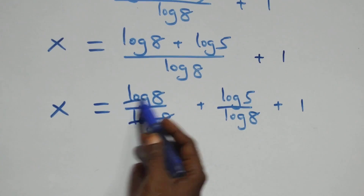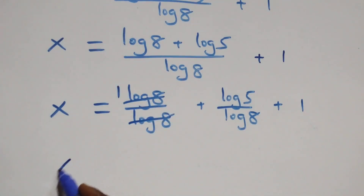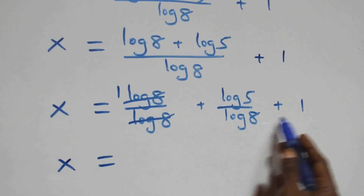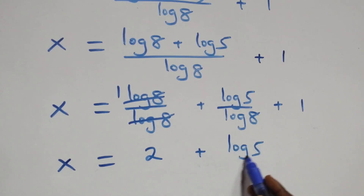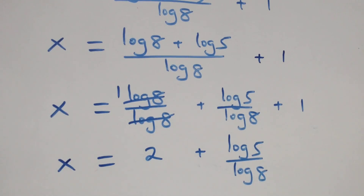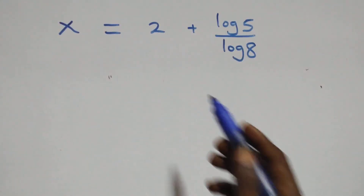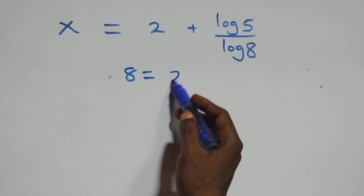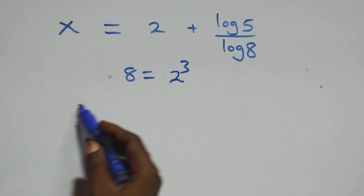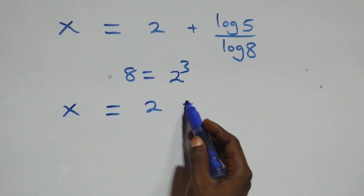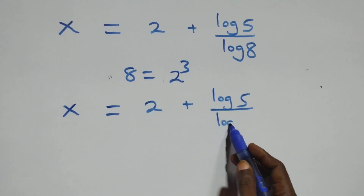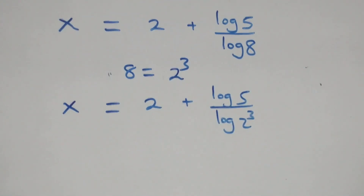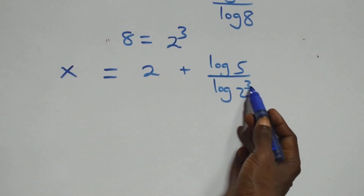Here log 8 over log 8 cancels to give 1, which implies x equals 1 plus 1 plus log 5 over log 8 — that is, x equals 2 plus log 5 over log 8. We can express 8 as 2 cubed, so x equals 2 plus log 5 over log(2 cubed). Applying the power of logarithm rule, the 3 comes down: x equals 2 plus log 5 over 3 log 2.